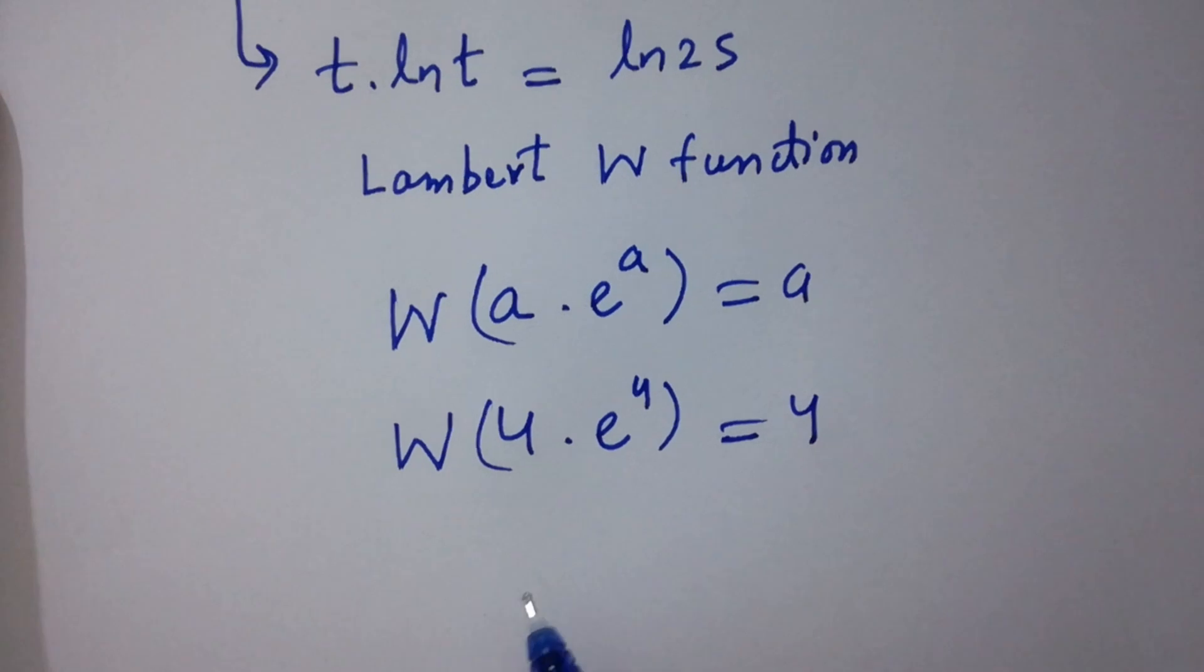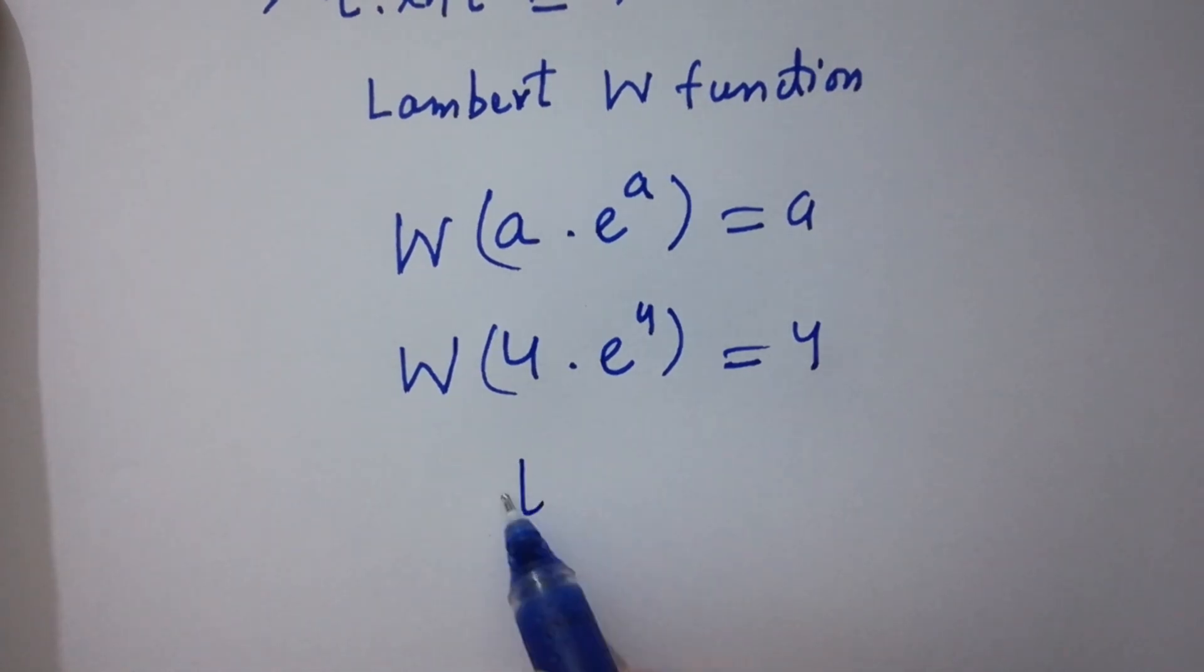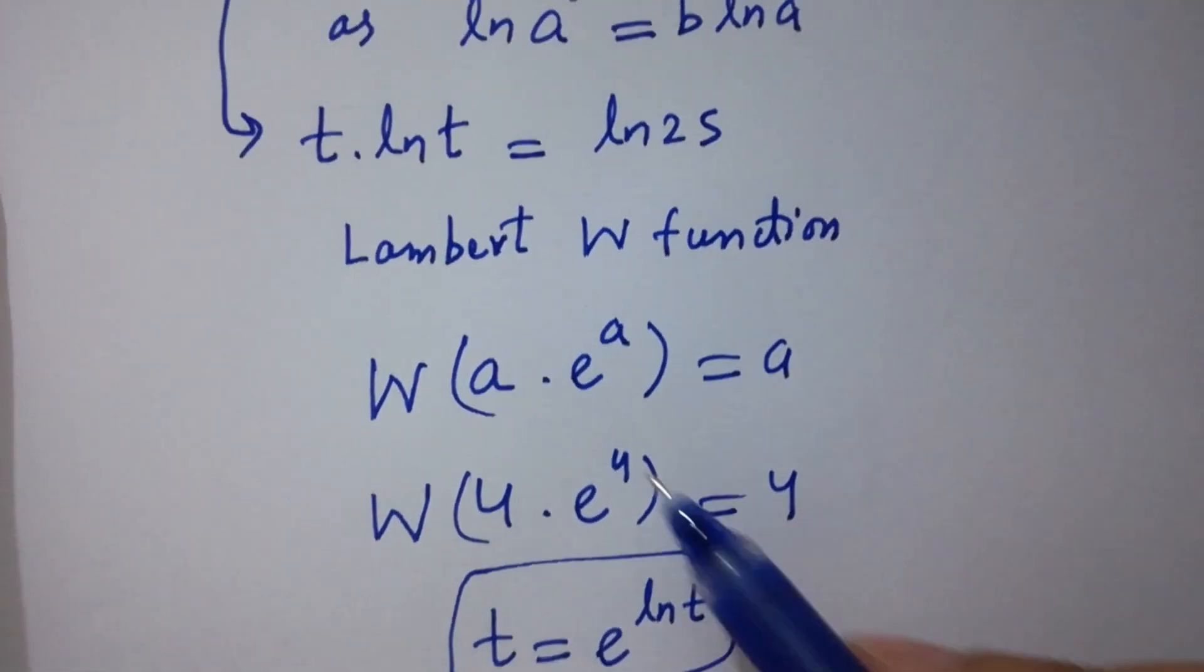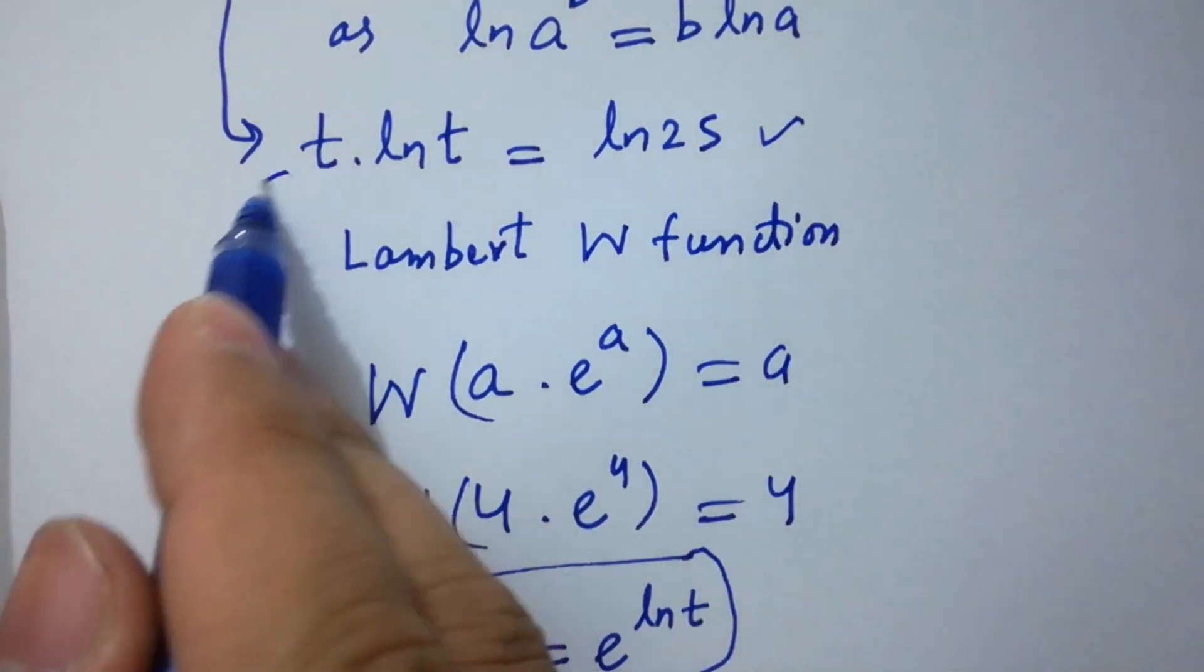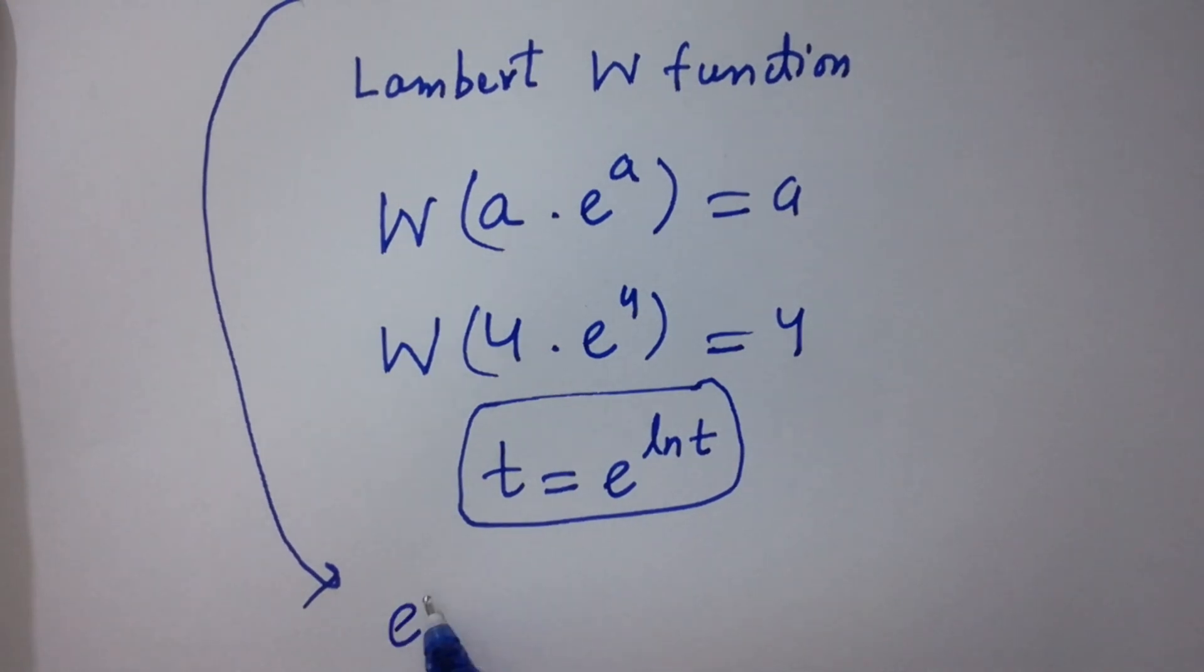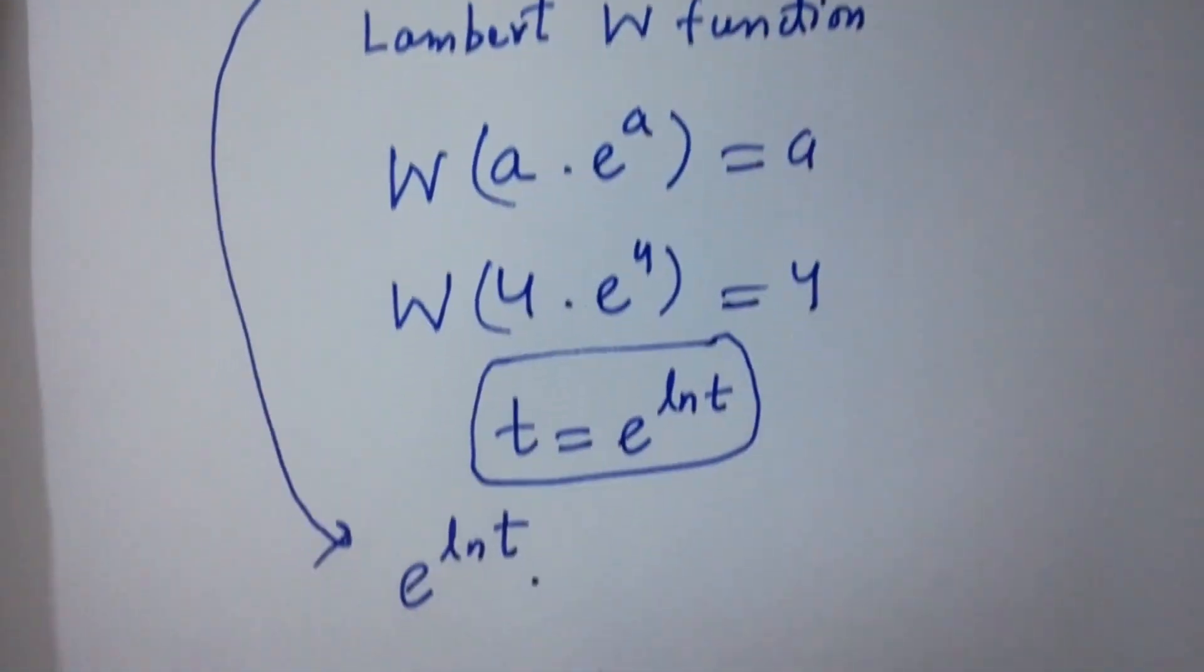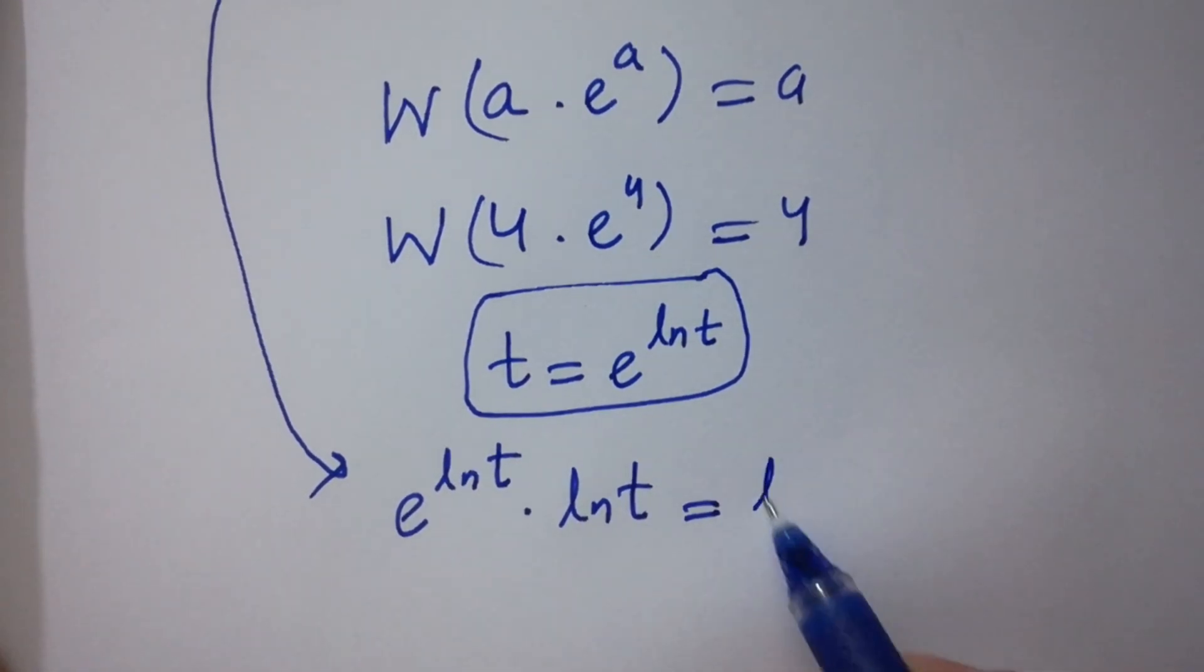And here we have t. Must remember that t equal to e to the power ln t, because we need here the power of e in this question. So, we can write it as t ln t equal to ln 25 will be here e to the power ln t times ln t as it is equal to ln 25.